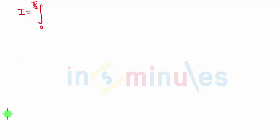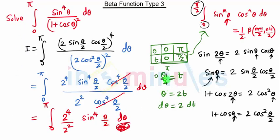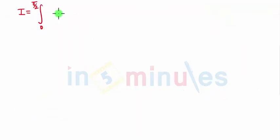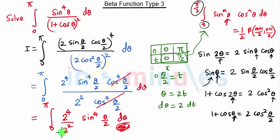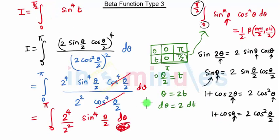We get the integration of 0 to π/2. Instead of θ/2 we are writing t, so we get sin t the whole raised to 4. Here we have 2 raised to 4 upon 2 squared, so we can cancel the 2s. We get 2 squared which is equal to 4, so here we have 4 into 4.